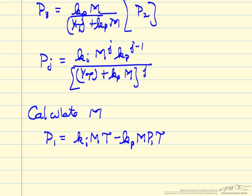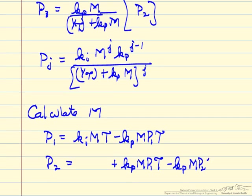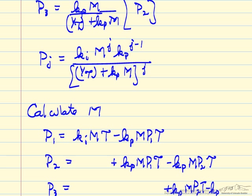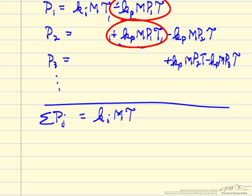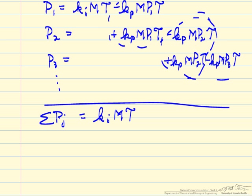Looking at the mass balances: polymer 1 reacts to make polymer 2, giving a minus sign in one balance and a plus sign in the next. Polymer 2 reacts to make polymer 3, and so on. What we notice is that if we do a summation of the concentrations of all the polymers, the terms cancel pairwise — this term and this term cancel, and so on — until terms become smaller and smaller. Our total polymer concentration summation is just equal to K_i times m times tau.